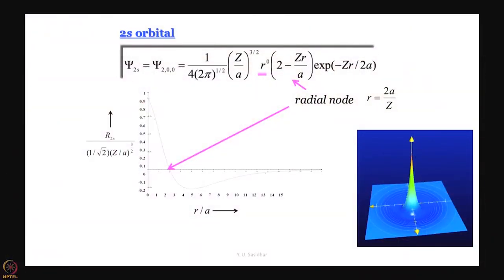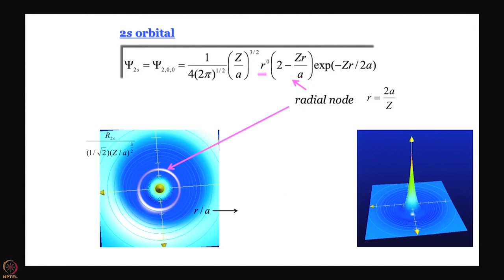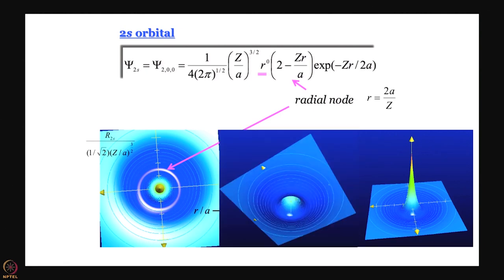Please do not forget that this vertical axis is the wave function — nothing else. From there you can generate this contour diagram, and what you see in white here is really the radial node where r is equal to 2a divided by z. We also gave you this kind of a view: if you look from the bottom you see these contours and you can see this big peak that is there inside.